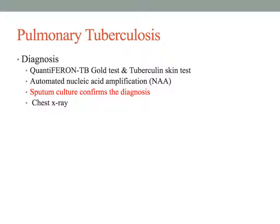The CDC recommends use of the NAA test because of its rapid turnaround, allowing patients to be treated appropriately in a more timely manner. There is also a blood test—QuantiFERON TB Gold—which tests for the presence of Mycobacterium tuberculosis, with results typically available within 24 hours.